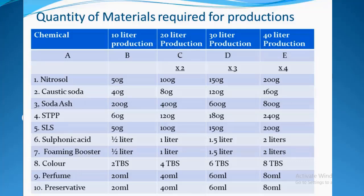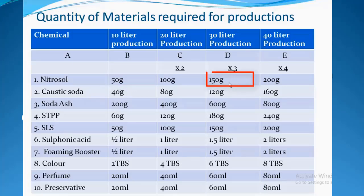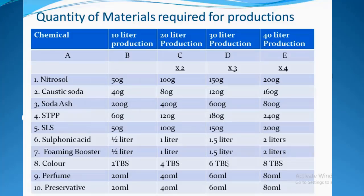The same logic applies if you want to produce 30 liters. All you do is multiply the quantities in column B by 3. To produce 30 liters: nitrosol is 50 times 3 = 150g; caustic soda is 40 times 3 = 120g; soda ash is 200 times 3 = 600g. Do this for all the materials and you arrive at all the quantities shown in column D.